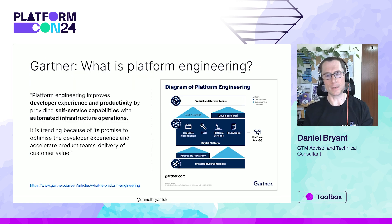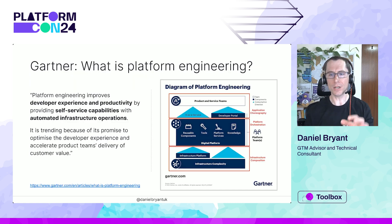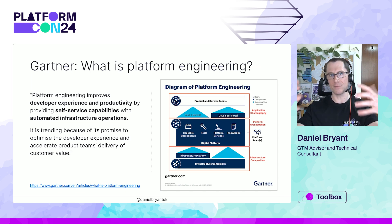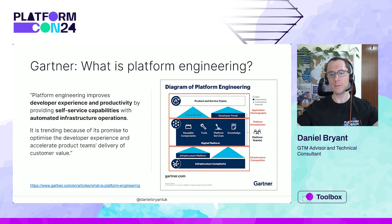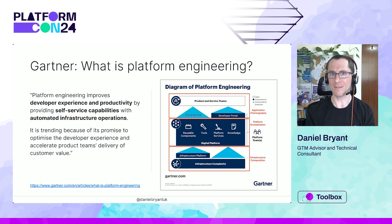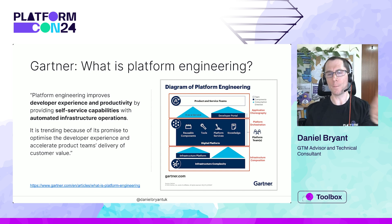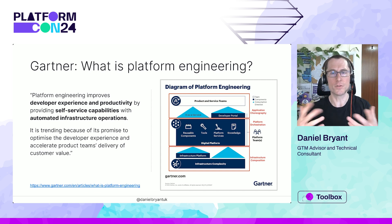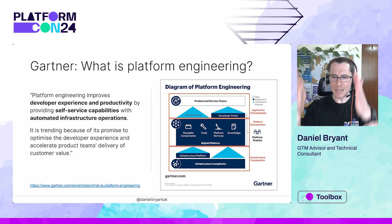Going back to the Gartner post: looking at their diagram again, I see three layers — product and service teams with everything as a service, a dev portal calling into a reusable component layer of tooling, platform services, and knowledge (which for me is the platform orchestrator role), and infrastructure composition at the bottom with IaC. I really like the way they've stacked this up.